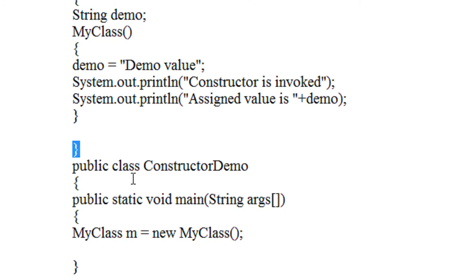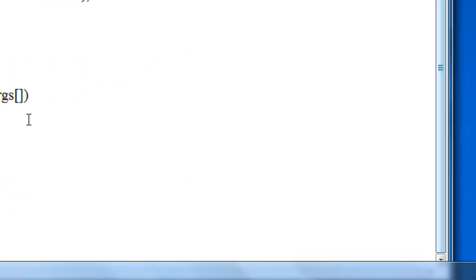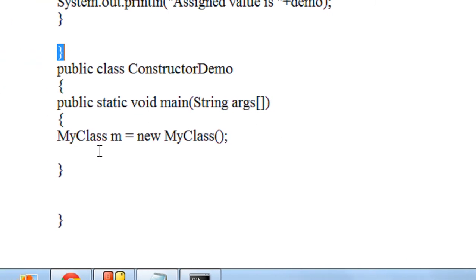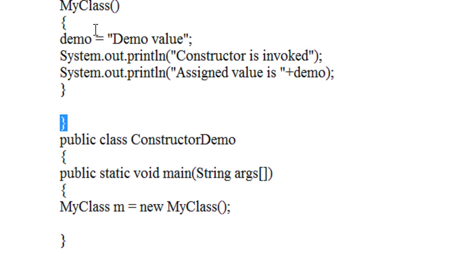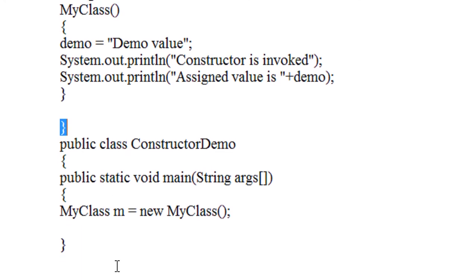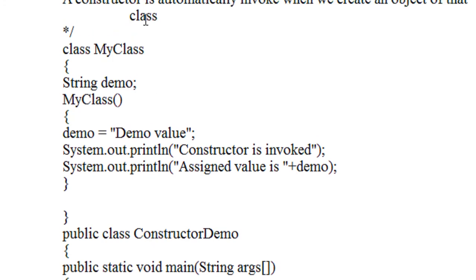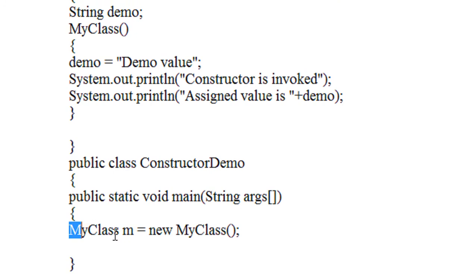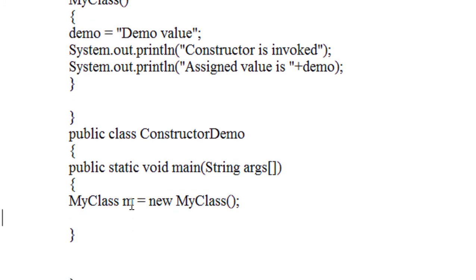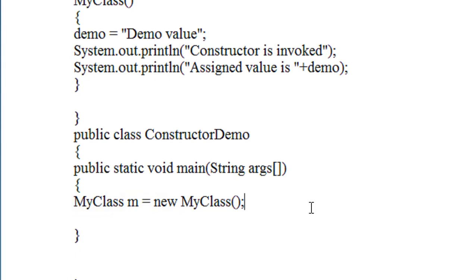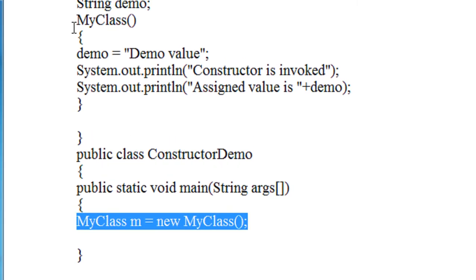Here again I create a public class called ConstructorDemo that contains the main method. In that main method I just create an object of MyClass. You can see that in this program I cannot invoke this constructor explicitly anywhere — a constructor is automatically invoked when we create an object of that class. So when the compiler executes that statement, the constructor will automatically invoke.